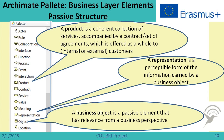At the end of the discussion on business layer elements, there are passive structure elements. Product is a very interesting element because it can include many different things like services and documents. There is representation, which shows a perceptible form of the information carried by a business object. There is also the business object itself, a passive element with relevance from the point of view of business — most often it is data. I didn't name all the elements here, just some of those most useful for our exercise.